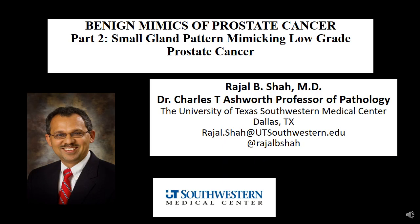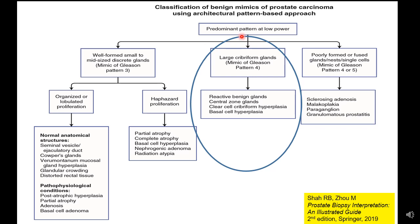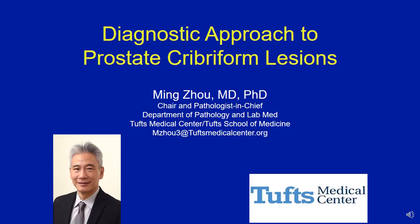That brings up all the points I wanted to discuss regarding this high grade pattern. I would also encourage you, as part of this series, to review part 2 which is the small gland pattern mimicking low grade prostate cancer. Another very important pattern that can mimic high grade prostate cancer is the large cribriform glandular pattern, which importantly can mimic the central zone. Important conditions in this pattern include central zone glands, clear cell cribriform hyperplasia, and basal cell hyperplasia, covered in two separate videos.